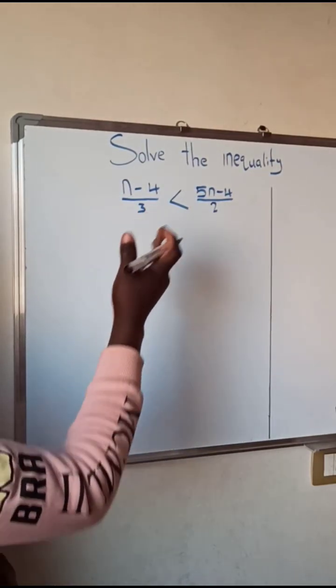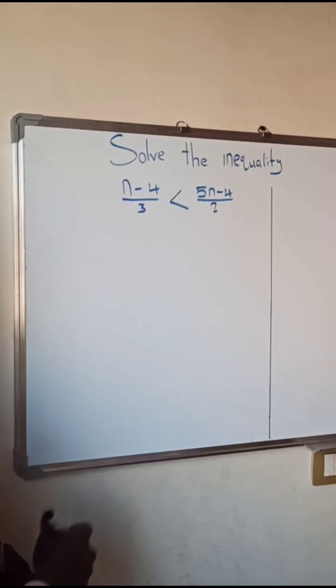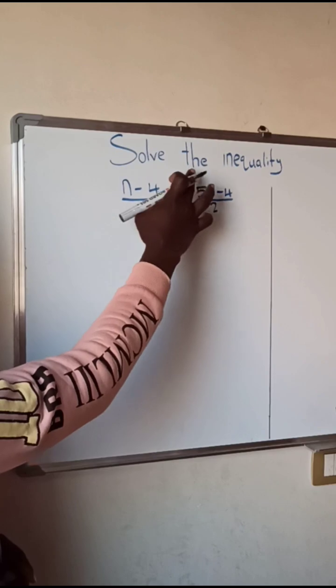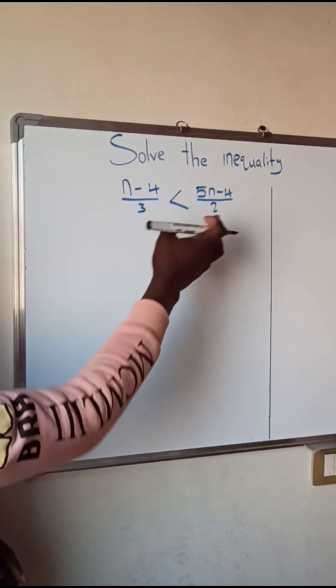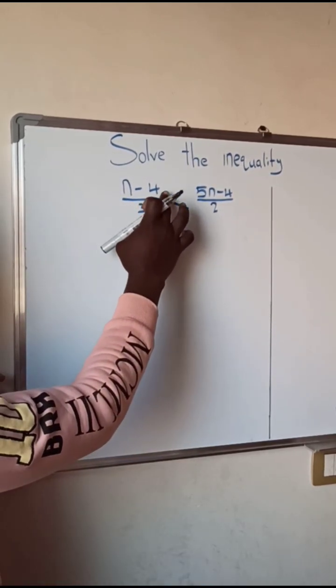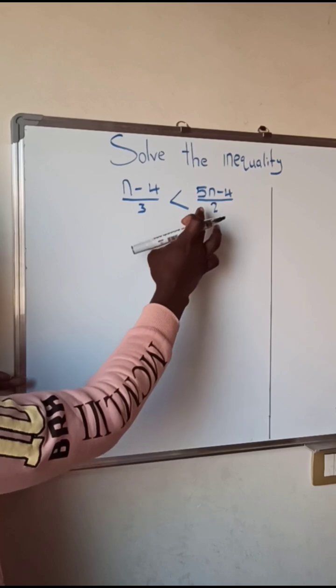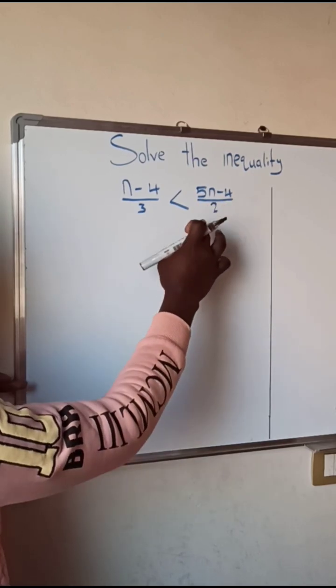Alright, today as you can see we have an inequality on the board. The question says solve the inequality, and this is the given inequality: n minus 4 over 3 less than 5n minus 4 over 2.